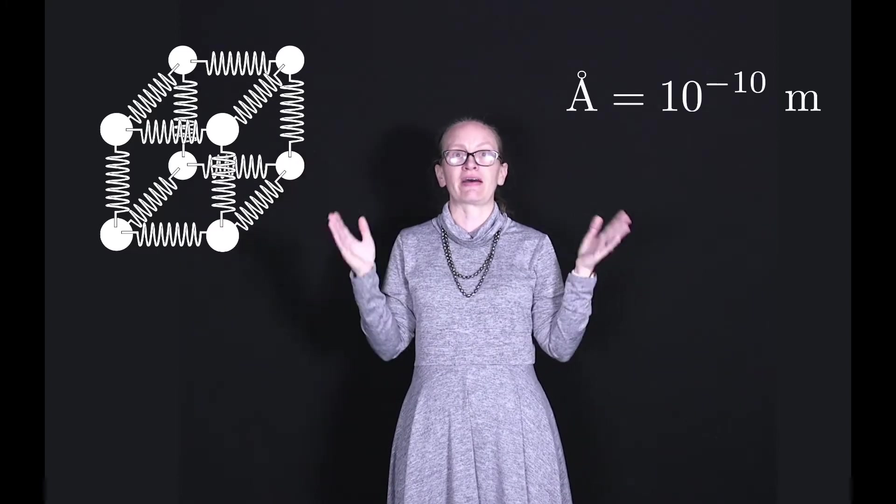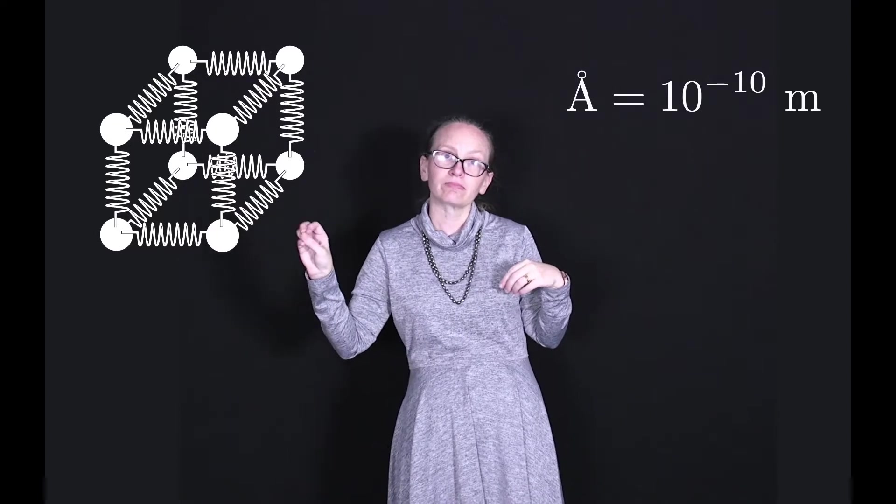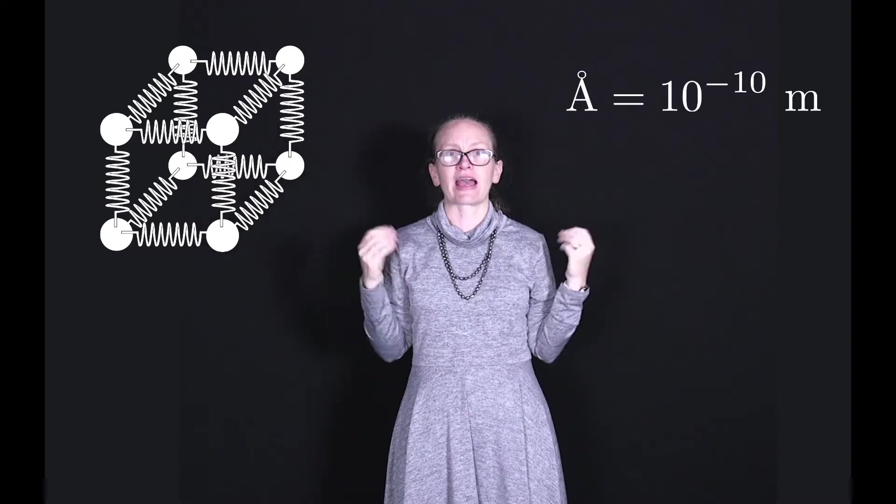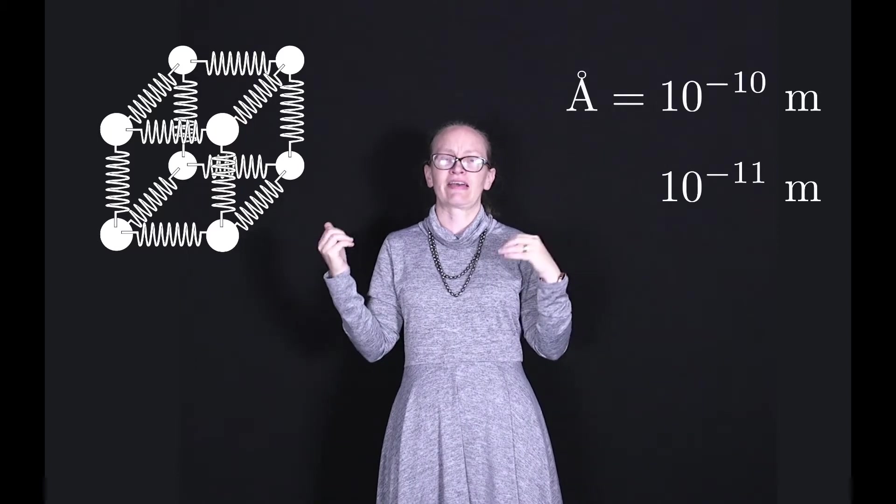To give you an idea of the scales that we're talking about, in a typical solid the spacing between the atoms is around about an angstrom, which is 10 to the minus 10 meters. The vibrations at room temperature are around about 10 to the minus 11 meters.